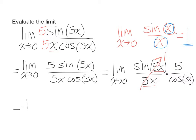So rewrite. The limit as x approaches 0, we don't need to write this sine of 5x over 5x anymore. We just need to write this part. This is 1. We don't need to have that anymore. So we're left with 5 over cosine 3x.